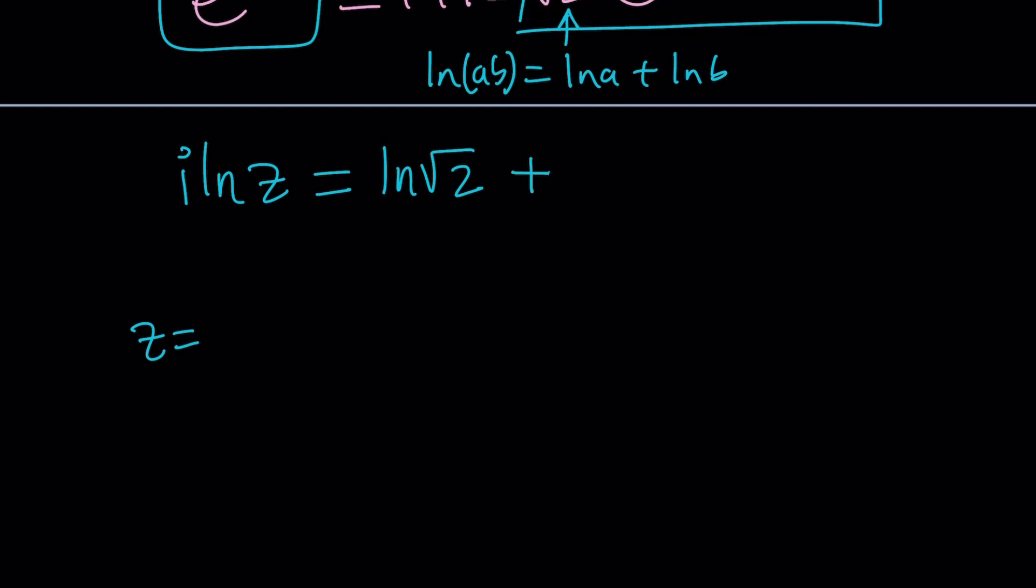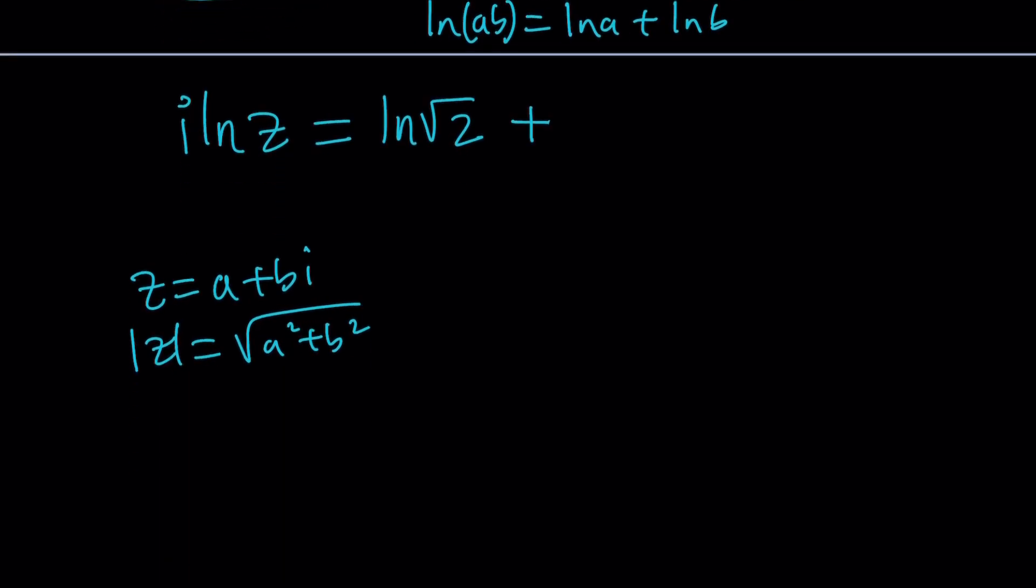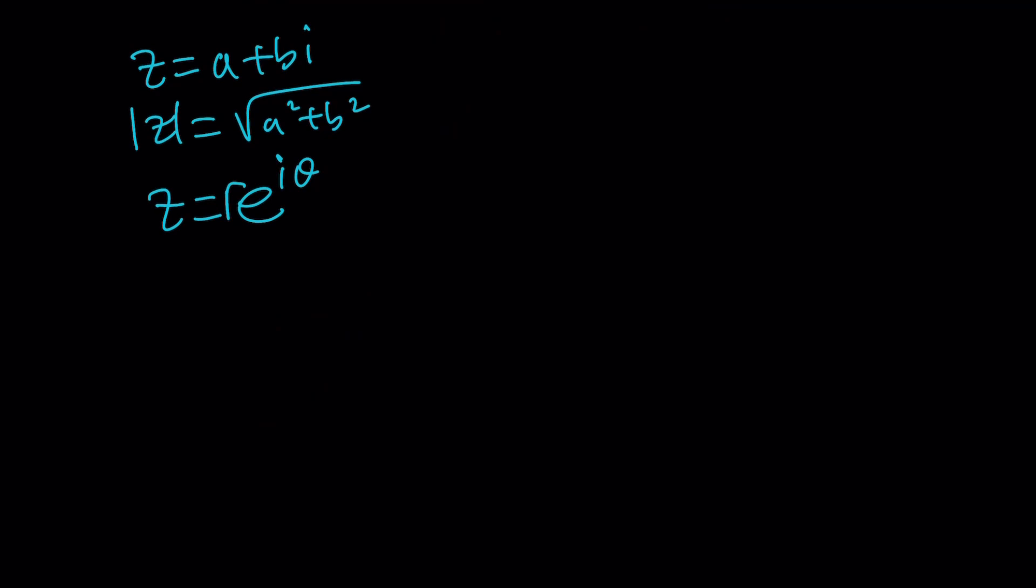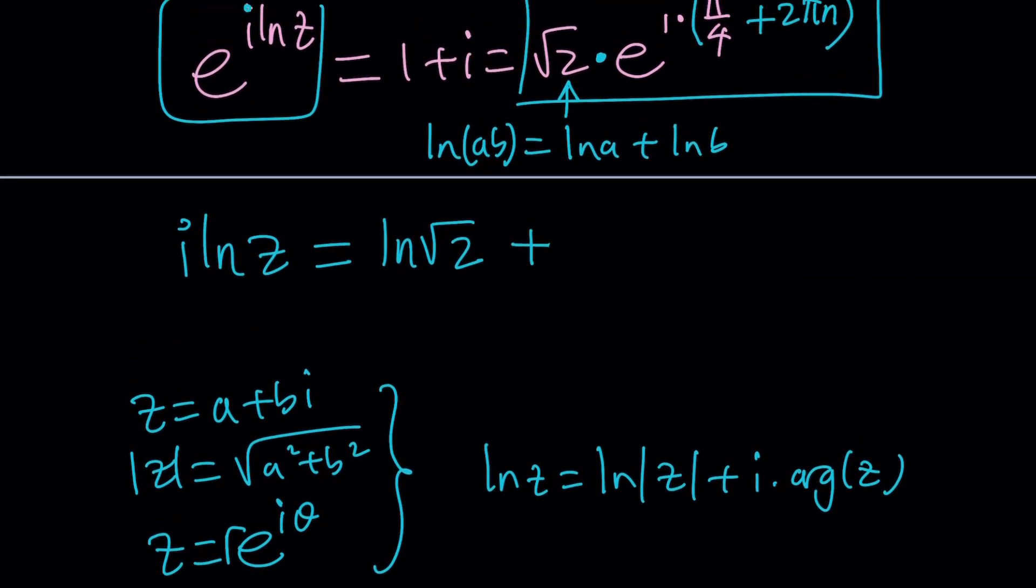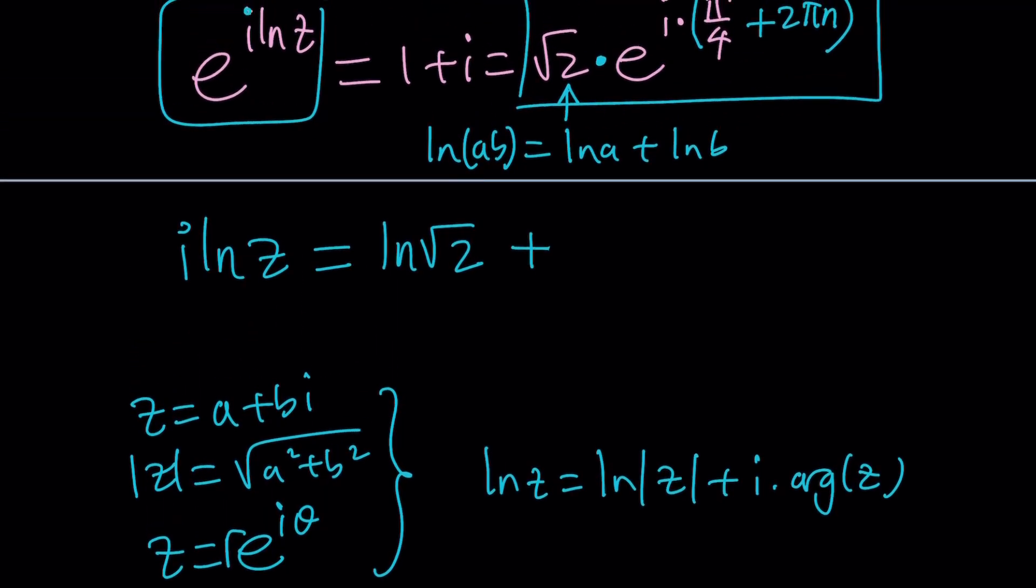If z is equal to a plus bi, its absolute value is going to be the square root of a squared plus b squared. And if you're trying to find what the ln z is, you can kind of write, you know suppose z can be written as e to the power i theta multiplied by r. When you ln both sides this is just going to be, in other words ln z can be written as ln absolute value of z plus i times the argument of z. Does that make sense? So it's basically how you can find the log of a complex number.